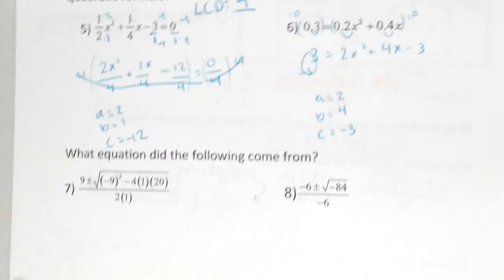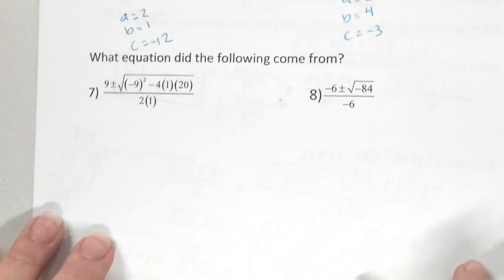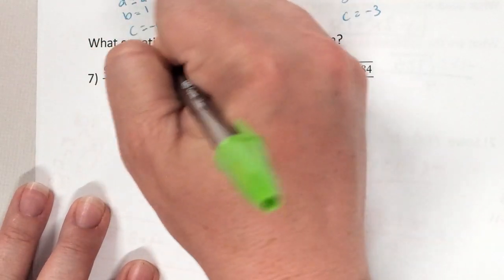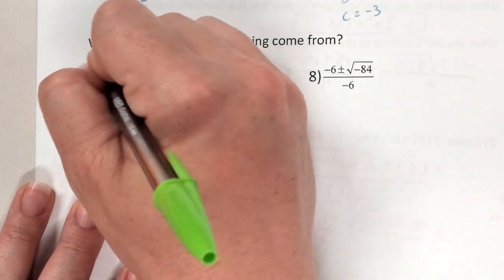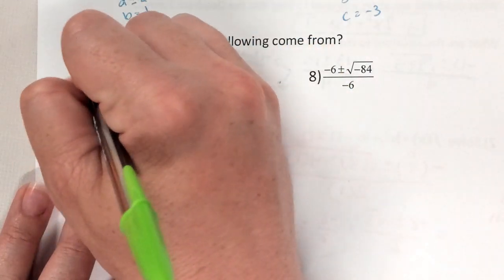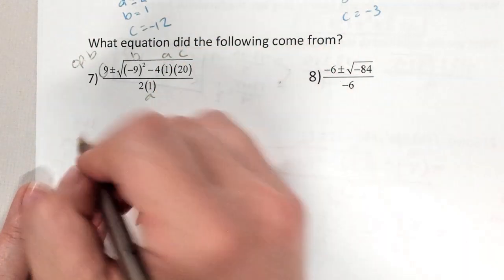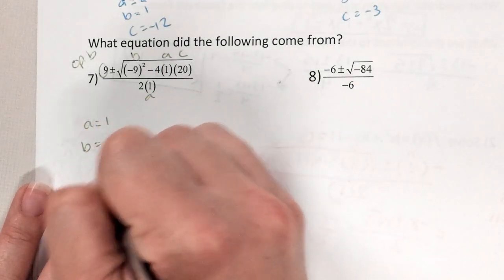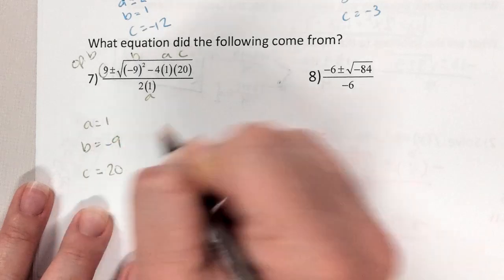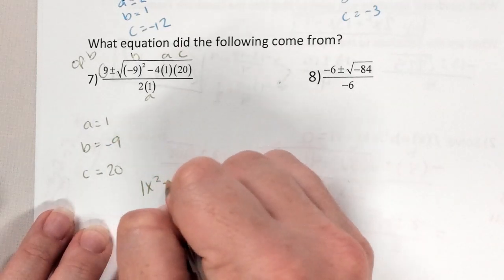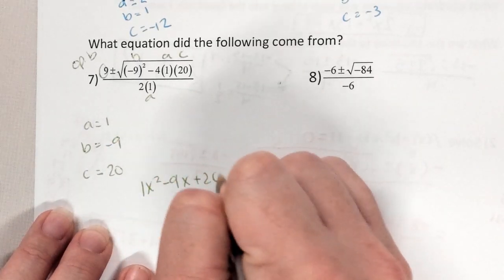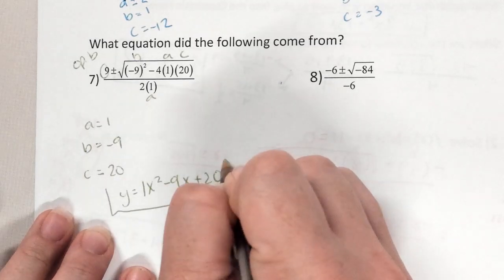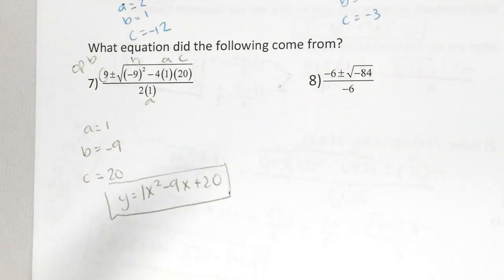Now it says: write the equation that the given quadratic formula setup came from. When it's not yet simplified, life is easy — this position is b, this is a, this is c, and the numerator is opposite b. So what's a? What's b? Negative 9. And c? That gives us 1x² minus 9x + 20 — that's the equation it came from. Super simple when it's not simplified.